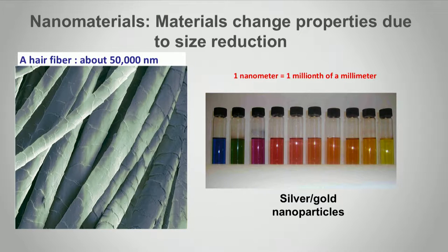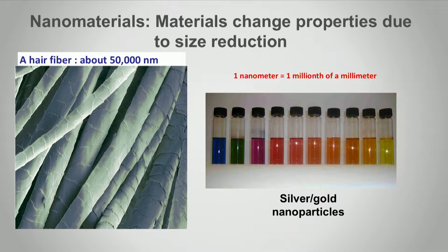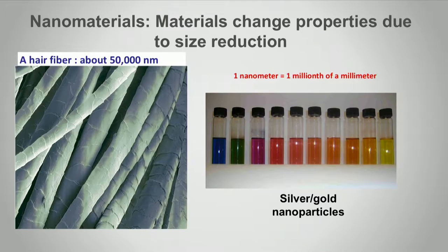We use nanomaterials in our inks. One nanometer is one millionth of a millimeter — just to give you a size perspective, one hair fiber is about 30,000 nanometers. What you see here is an electron microscope image of a hair fiber. The colorful samples you can also see at the exhibition are gold and silver that are different from the gold and silver you know. We can make blue silver, red gold, blue gold, yellow gold, green gold, purple silver, simply by controlling the size and morphology of these particles.